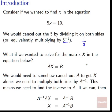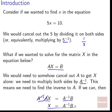What if we wanted to solve for the matrix X in the equation AX equals B? We need to somehow cancel out A to get X alone — the same basic idea, we just need to cancel out an entire matrix. So we multiply both sides by the inverse of A. Then A inverse times A times X gives A inverse times B, and since A inverse and A cancel each other out, we're left with X equals A inverse B. It's very similar to 5x equals 10: multiply by A inverse on both sides to get X alone.